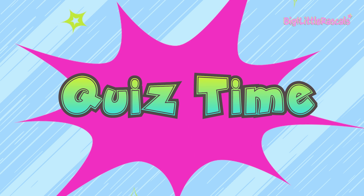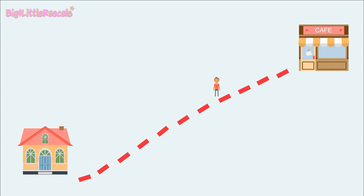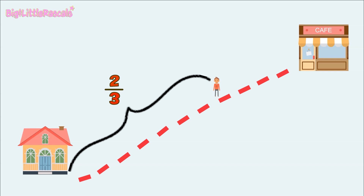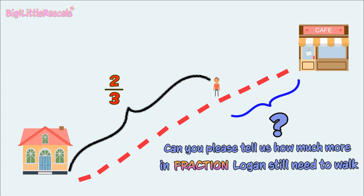Now, quiz time! Ready? Okay. Logan is walking from his house to his favorite cafe, and we met him on the way. We ask Logan how far he has walked from his house to the cafe. Logan thinks that he has walked two-thirds of his total trip. So, how much more does Logan need to walk to reach the cafe? Can you tell us how much more in fraction Logan still needs to walk to reach the cafe?